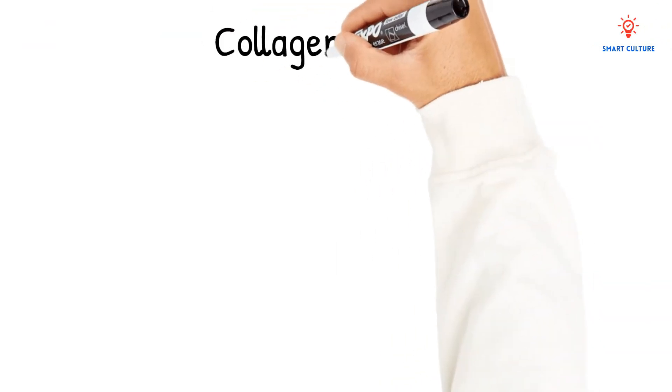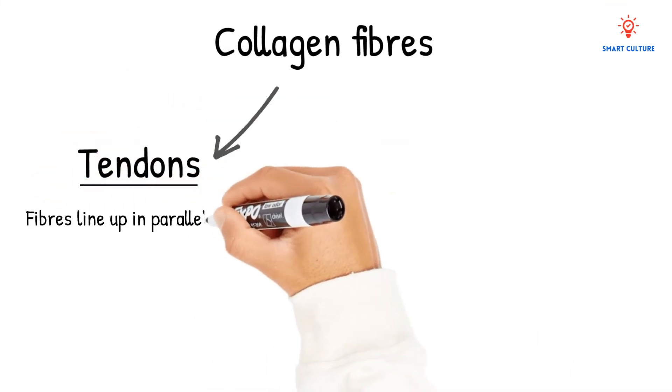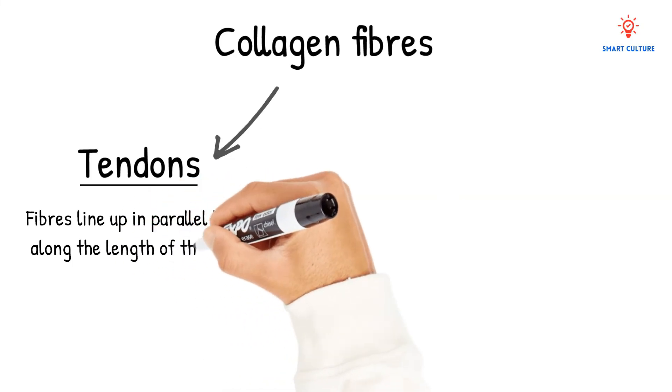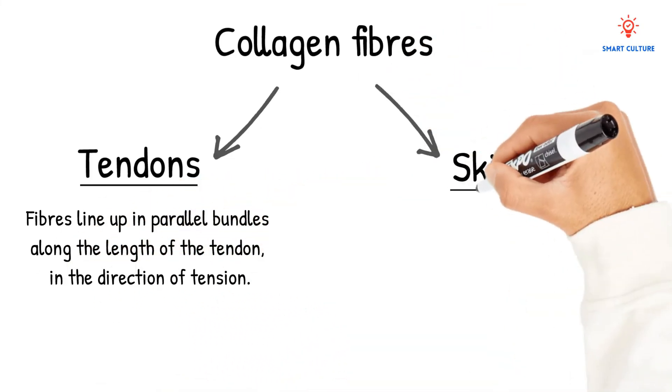For example, the collagen fibers in tendons line up in parallel bundles along the length of the tendon, and this is very different from the collagen fibers in the skin.